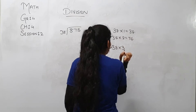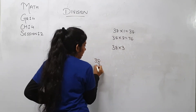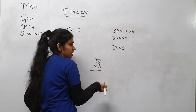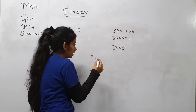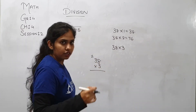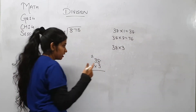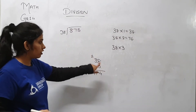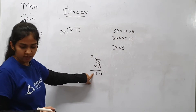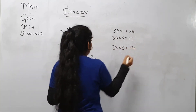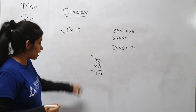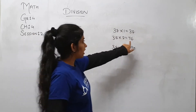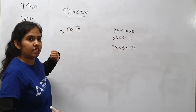38 threes — let's calculate: 8 threes are 24, carry 2, and 3 threes are 9 plus 2, that is 11. So 38 threes are 114, which is greater than 87. So we will take 38 twos, that is 76. 7 minus 6 is 1, 8 minus 7 is 1. And carry.